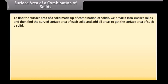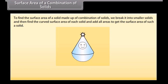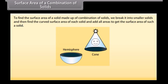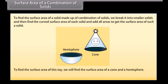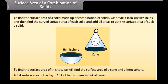Surface area of a combination of solids. To find the surface area of a solid made up of a combination of solids, we break it into smaller solids and then find the curved surface area of each solid and add all areas to get the surface area of such a solid. For example, look at this toy. This toy is a combination of a cone and a hemisphere. The total surface area of the toy equals the curved surface area of the hemisphere plus the curved surface area of the cone.